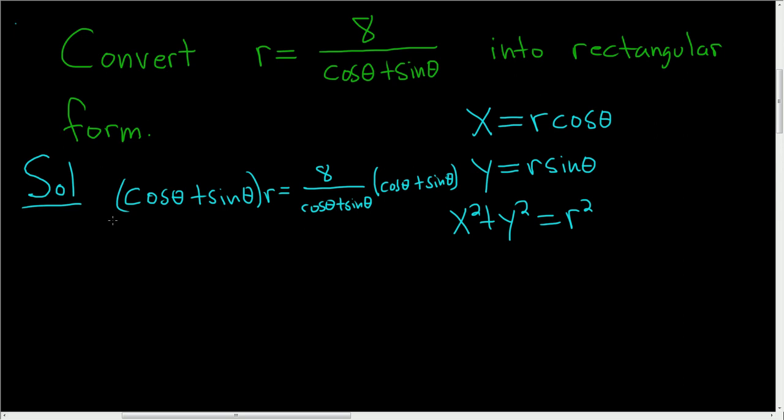On the left-hand side, we can distribute the r's. So we get r cosine theta plus r sine theta. And on the right-hand side, these guys cancel, so we get 8.